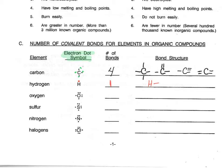Looking at oxygen, we see that there are six valence electrons, so that means there are six dots around oxygen, leaving us with only two that are alone, so we only have two bonds. Those two bonds can either go in two different directions, or both go in the same direction for a double bond.